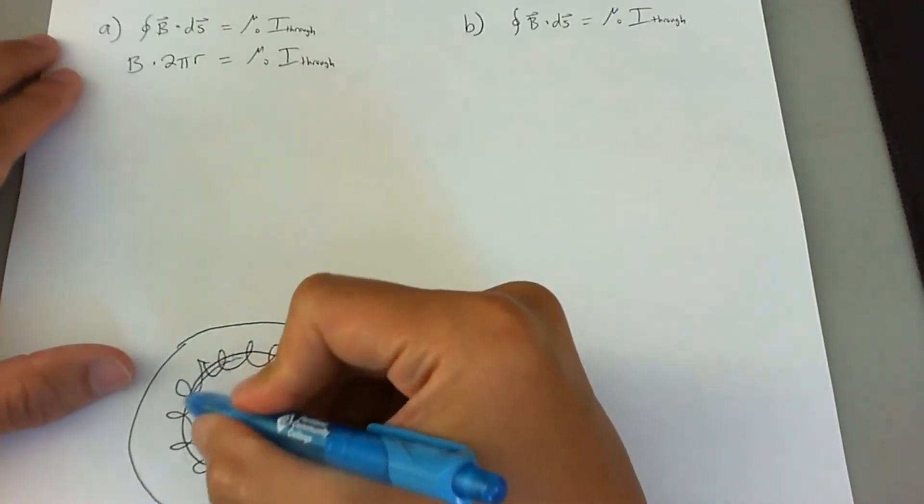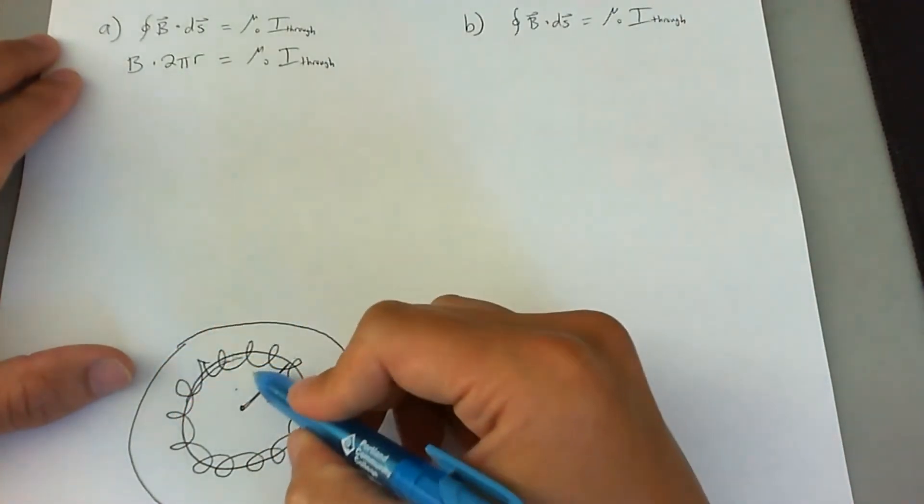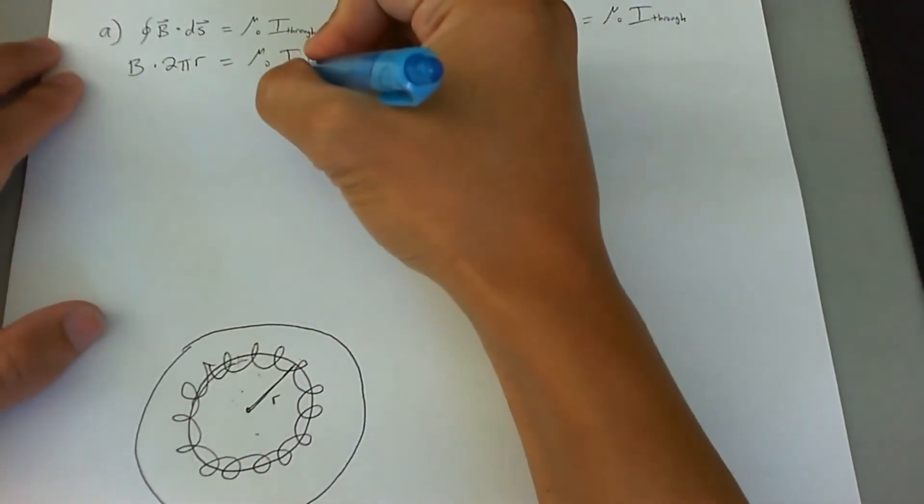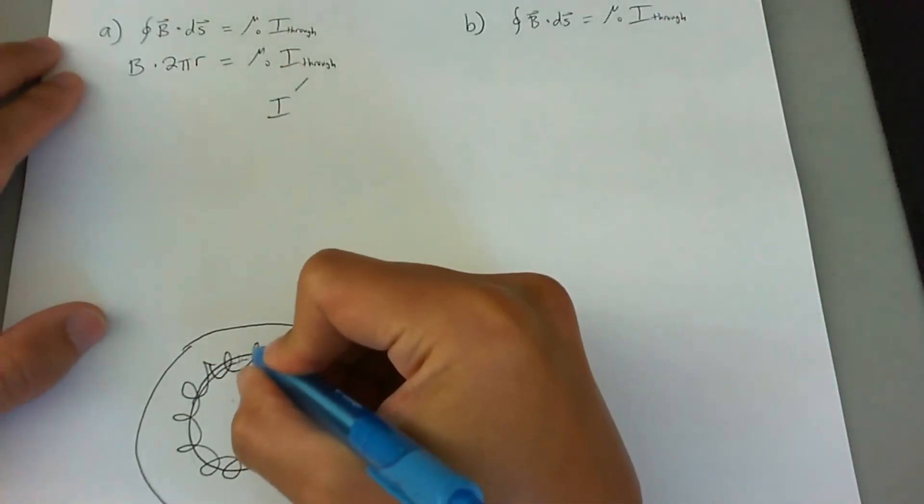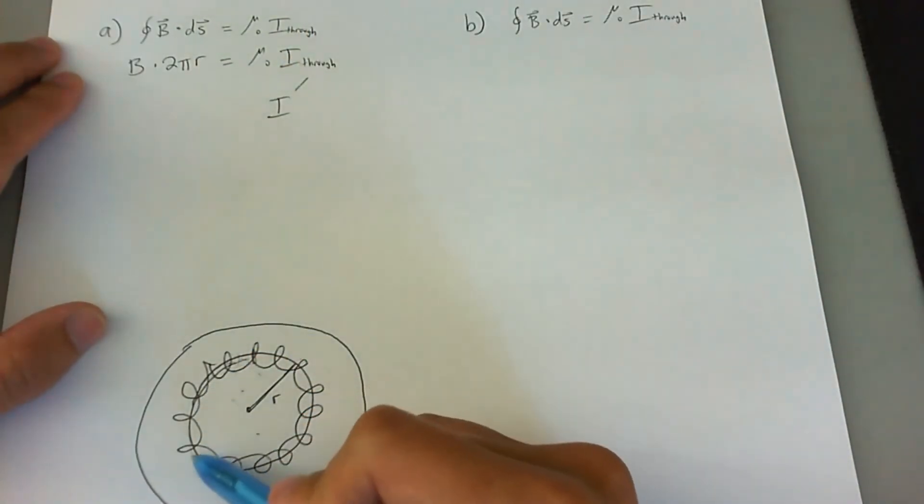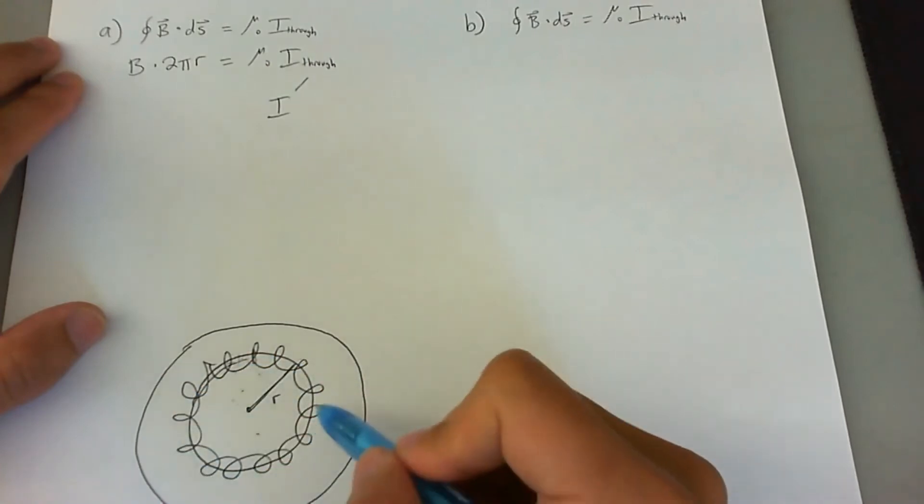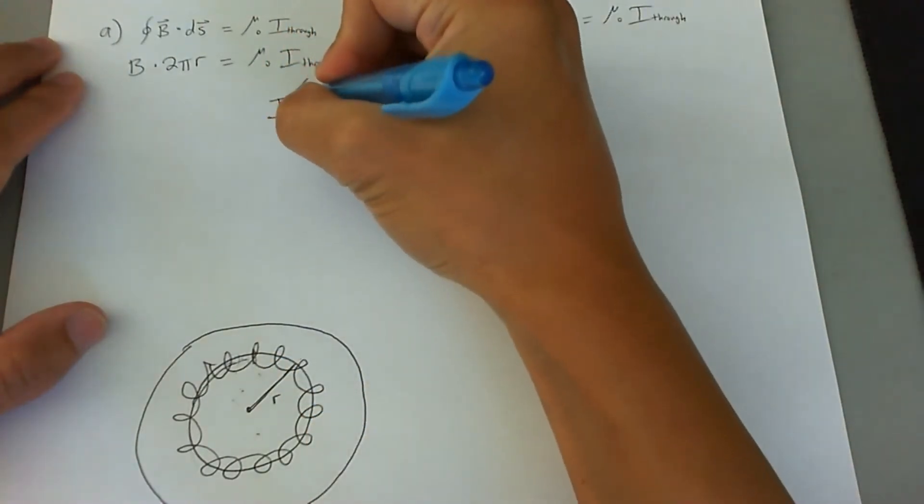So that means inside this amperian loop, current always goes down into the paper. So I is simply going to be the amount of current that goes through one wire multiplied by the number of loops that are in this solenoid or that's in this toroid. So that's going to be N loops.